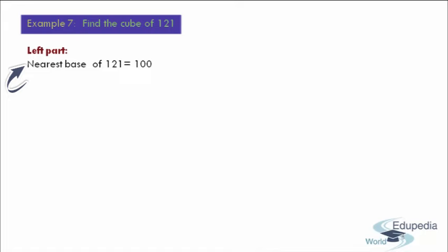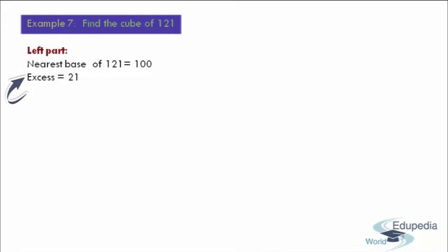Moving to step number 2, what we have to do is we have to find the excess with respect to the base. Here the given number is 121 and the base is 100. When you compare these two numbers, we get 21 as the excess.